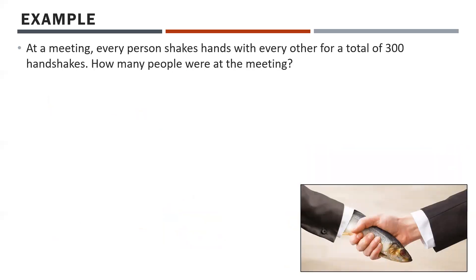At a meeting, every person shakes hands with every other person for a total of 300 handshakes. How many people were at the meeting? A handshake occurs between two people, so it's nC2 — for some unknown number of people n, choosing two — and that equals 300. Since we're looking for n, we need to use the formula rather than just a calculator function.